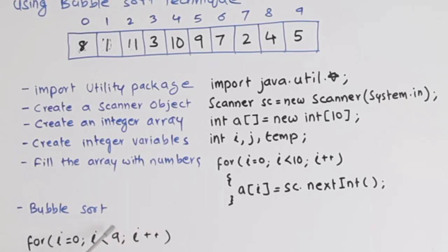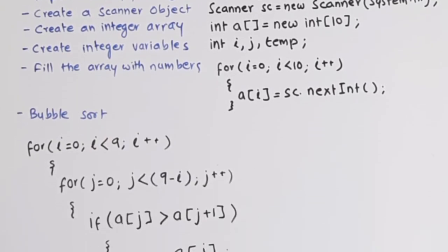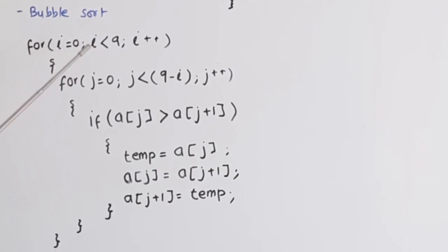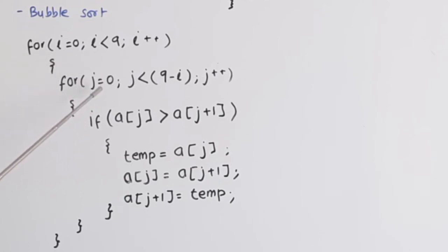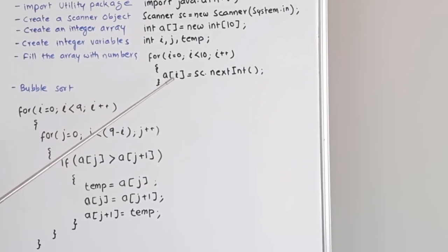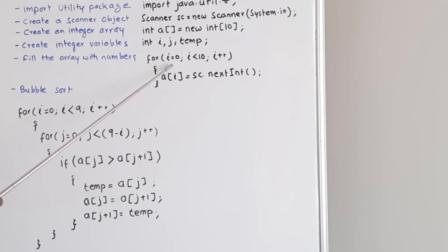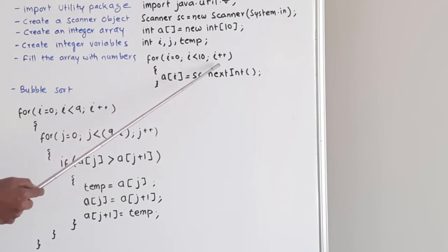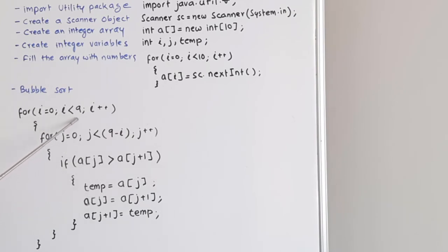Once the array is filled, we sort it using the bubble sort method. We use two loops — the outer loop uses variable i and the inner loop uses variable j. For the outer loop: 'for(i=0; i<9; i++)'. Note that while filling the array we used i<10, but while sorting we use 9 instead of 10. Here the variable i is not used directly inside the array — it simply represents the number of times the loop iterates, which is 9 times.